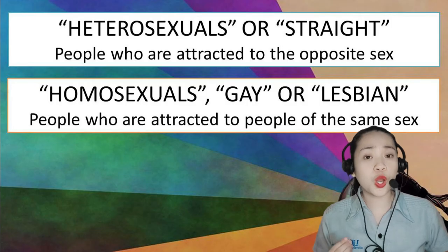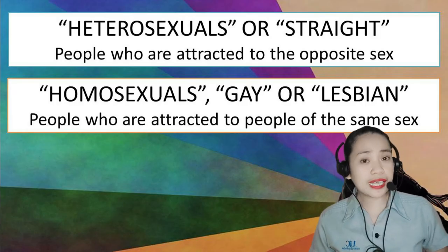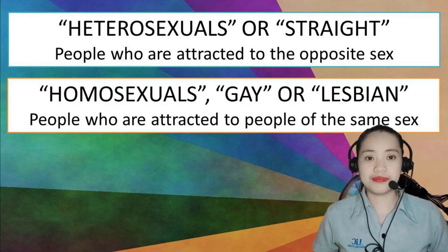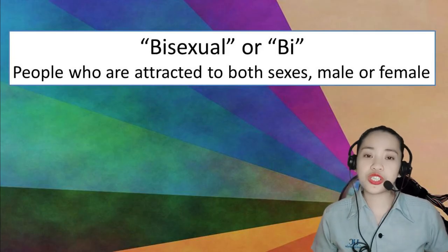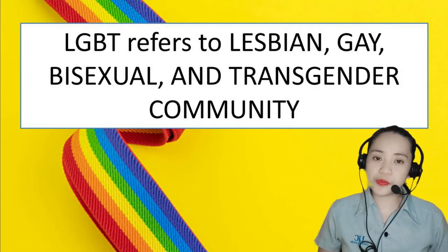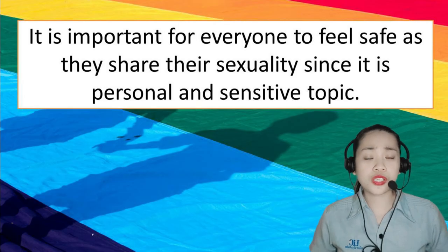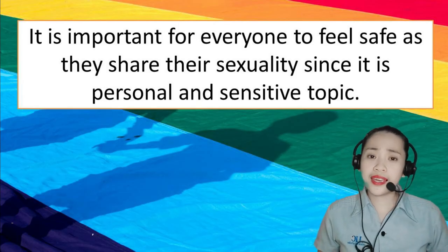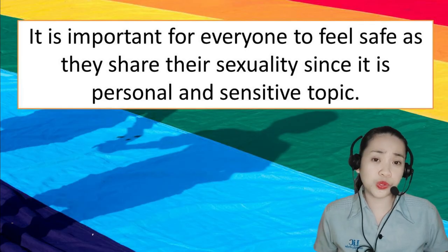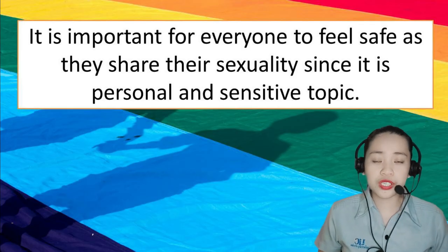People who are attracted to the opposite sex are called heterosexuals or straight. People who are attracted to people of the same sex are called homosexuals, gay, or lesbian. Bisexual or bi are people who are attracted to both sexes, male or female. LGBT refers to the lesbian, gay, bisexual, and transgender community. Identifying as heterosexual, lesbian, bi, gay, or transgender is a deeply personal process. So it may be more difficult for others to come out, or for them to become comfortable enough with their sexuality that they feel safe to share it with other people.